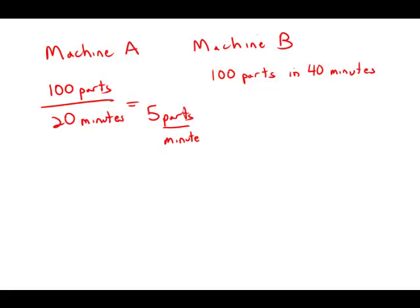And so machine A works for six minutes, six minutes making parts at 5 parts per minute. That would be 30 parts and that's answer choice A.